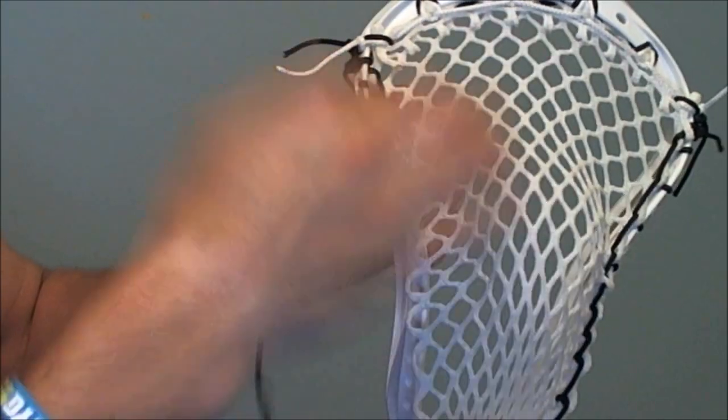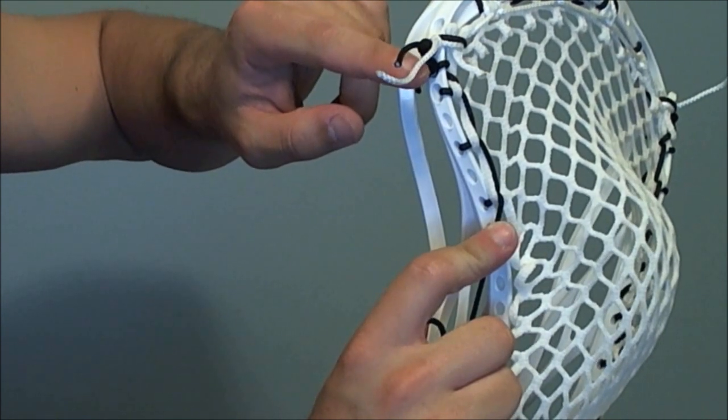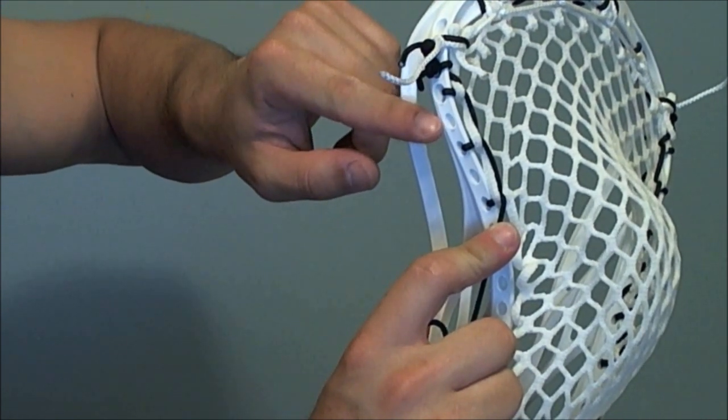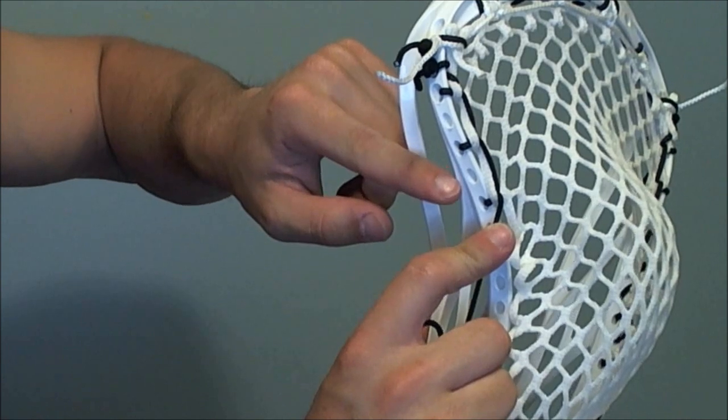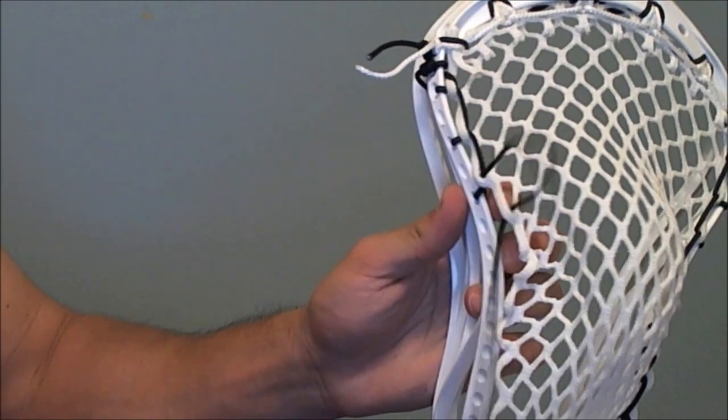Pulling it nice and tightly to create that channel and skipping these sidewall holes. So we've got tie on SI, skip SI, skip SI, then we're going to go another SI with another skip.